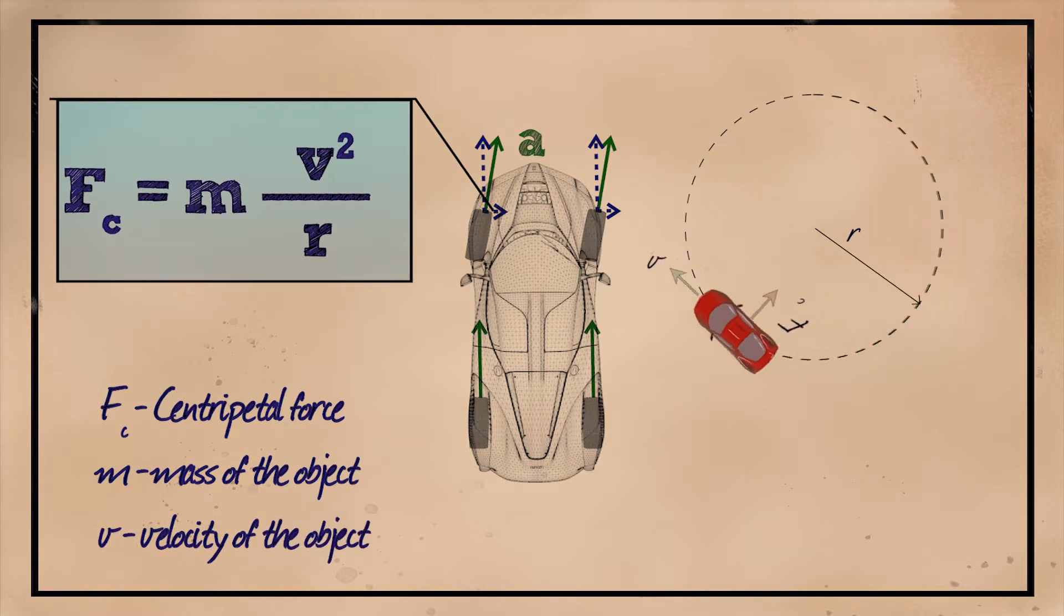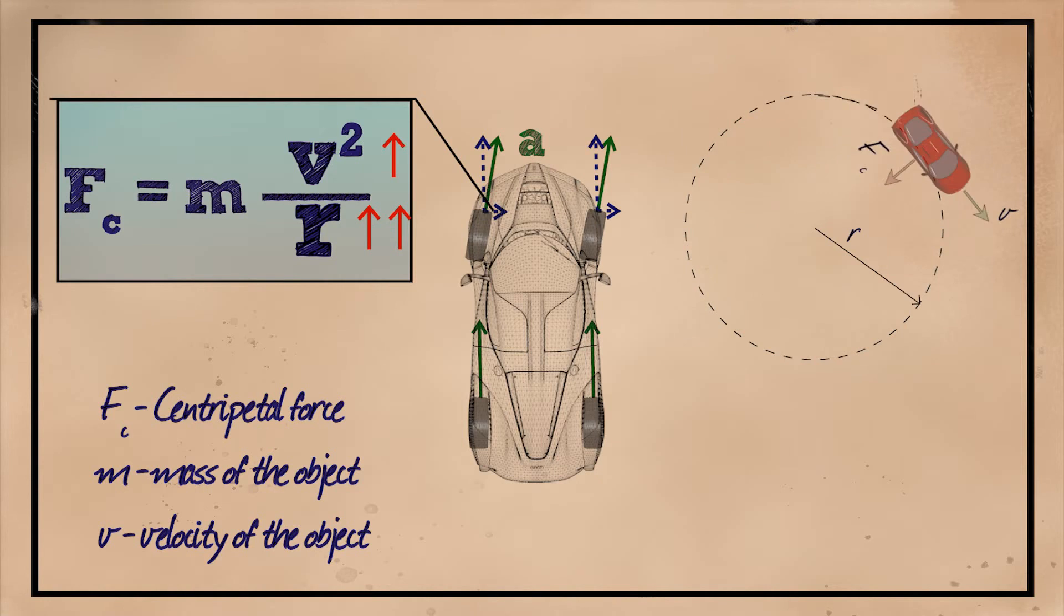From the circular motion formula, we can notice that if we increase the velocity of the car, we would have to increase the radius of the curve as well, to keep the car from sliding off, which explains why the curves on highways are much milder with large radii compared to the urban roads.